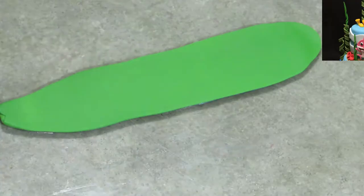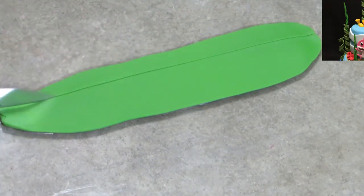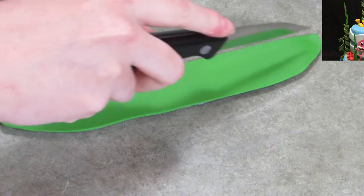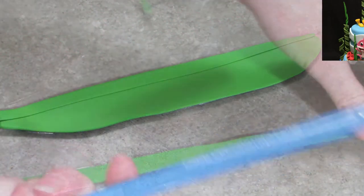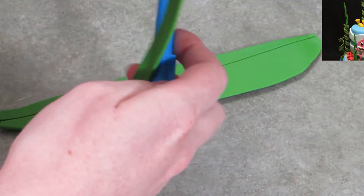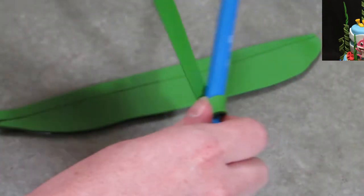We're going to start with the seaweed first because it's the easiest and it's the most versatile. You can use the same design to make confetti or streamers or anything like that. Roll out your green or whatever color you got. We're going to go with green here because it's seaweed.